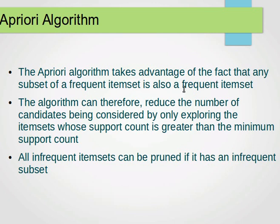The algorithm takes advantage of the fact that any subset of a frequent item set is also a frequent item set. It can therefore reduce the number of candidates being considered by only exploring item sets whose support count is greater than the minimum support count. The minimum support count can be used as a fraction between zero and one — dividing item frequency by the size N of the transaction database — or as an integer, compared directly against item frequency.